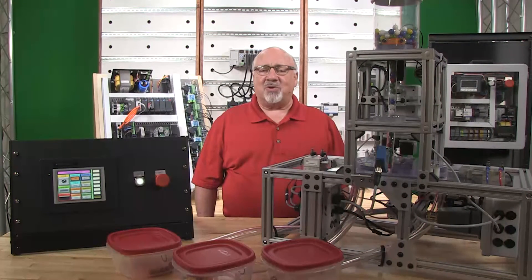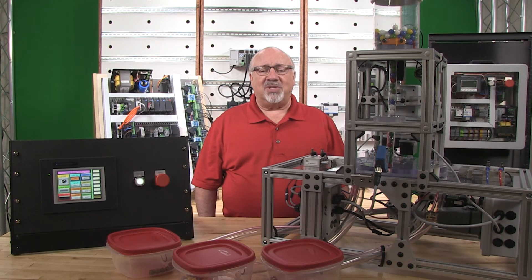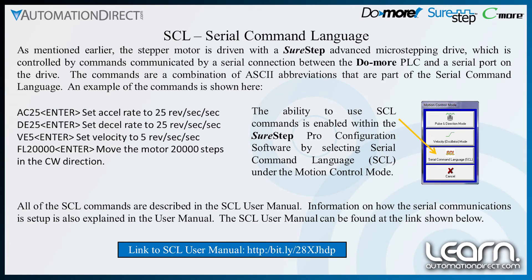The stepper motor is driven with a SureStep Advanced Micro Stepping Drive controlled by commands communicated via a serial connection between the DoMore PLC and the serial port on the drive. The commands are a combination of ASCII abbreviations that are part of the serial command language. For example: AC25 sets the acceleration rate to 25 revs per second per second; DE25 sets the deceleration rate to 25 revs per second per second; VE5 sets the velocity to 5 revs per second; and FL 20,000 is feed to length, which moves the motor 20,000 steps in the clockwise direction. All SCL commands are described in the SCL user manual, available at the link shown here.